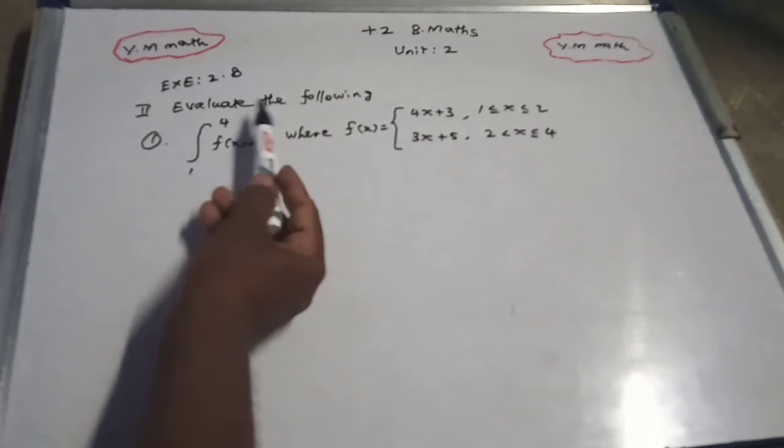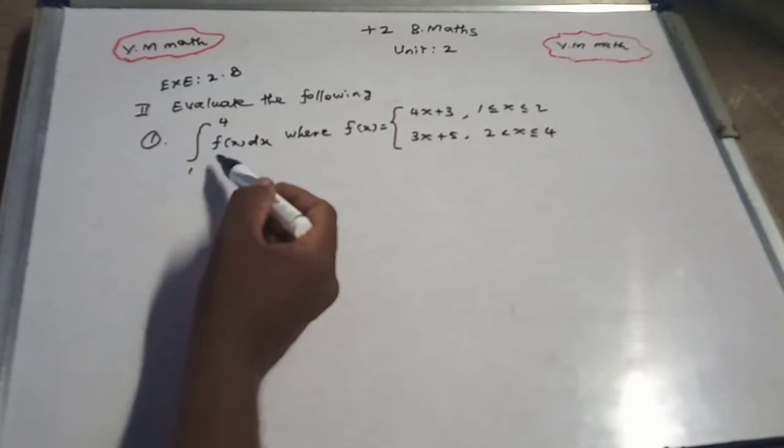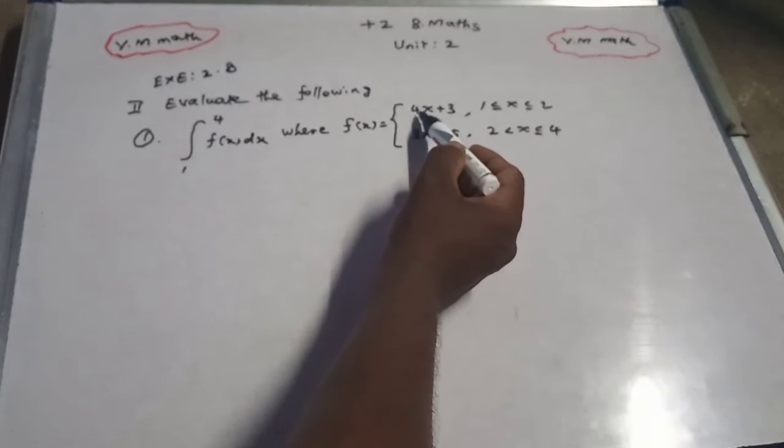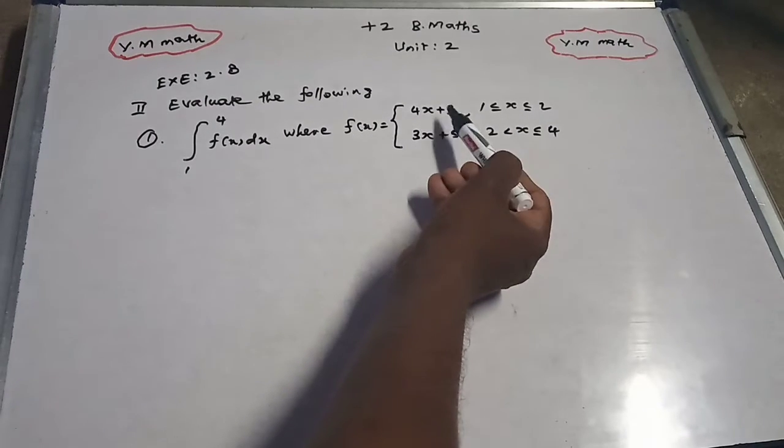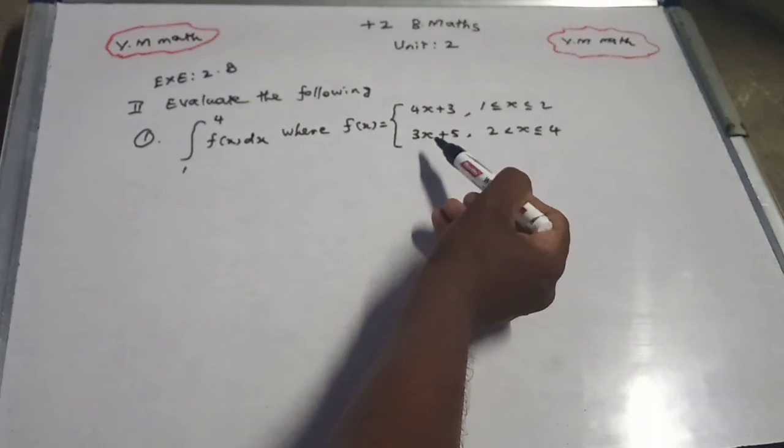Question 2.8: Evaluate the following integral from 1 to 4 of f(x)dx, where f(x) equals 4x plus 3 for x from 1 to 2, and 3x plus 5 for x from 2 to 4.